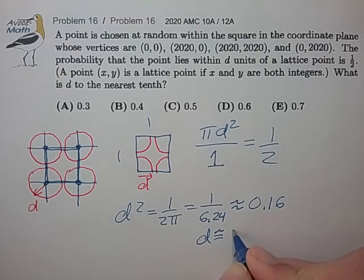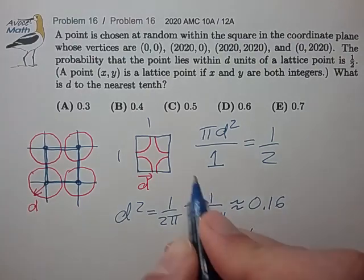From which d is approximately 0.4, pretty close, for choice B.